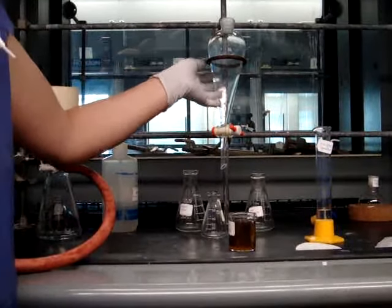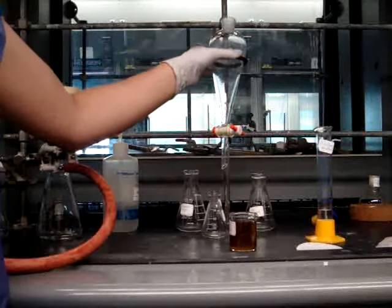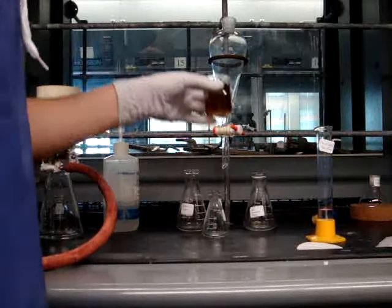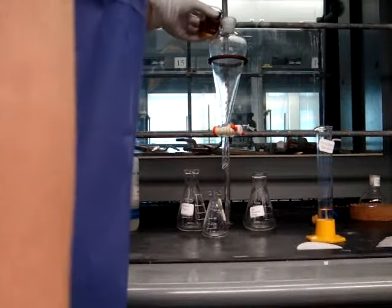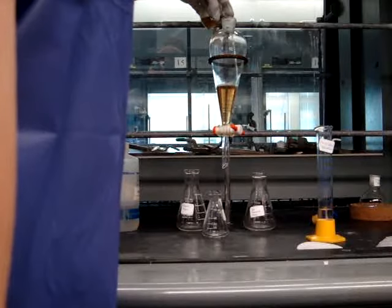This is a separatory funnel, which you must use a ring clamp at all times when it is standing in your hood. You're going to pour your compound dissolved in the organic solvent into the separatory funnel, making sure that it is closed before you do so.